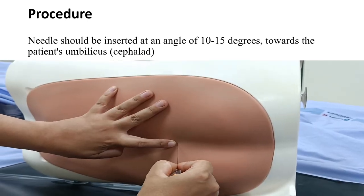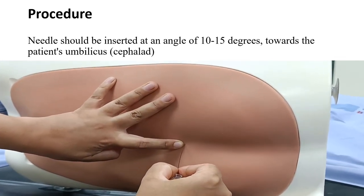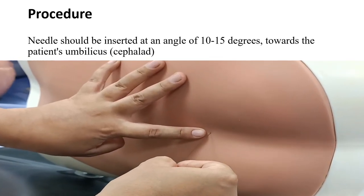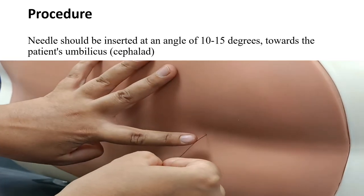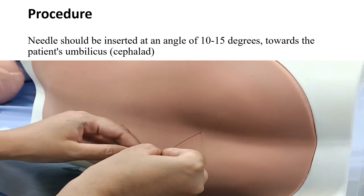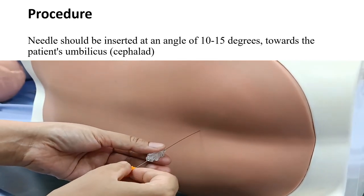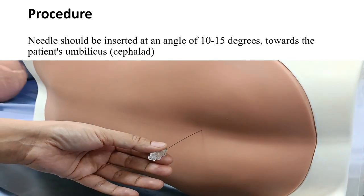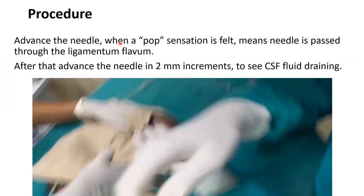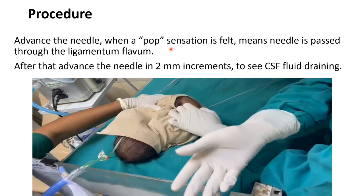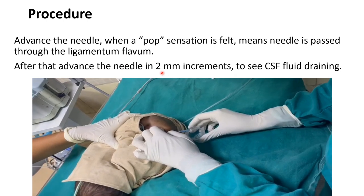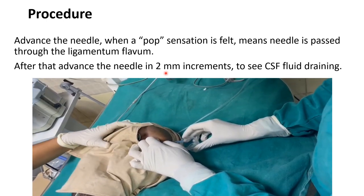In this mannequin you can see I am inserting the spinal needle. Once you feel the pop sensation, that means it has crossed the ligamentum flavum. You should then remove the stylet to see the flow of CSF. When advancing the needle and you feel the pop sensation, meaning the needle has passed through the ligamentum flavum, after that you advance the needle only in 2 mm increments.